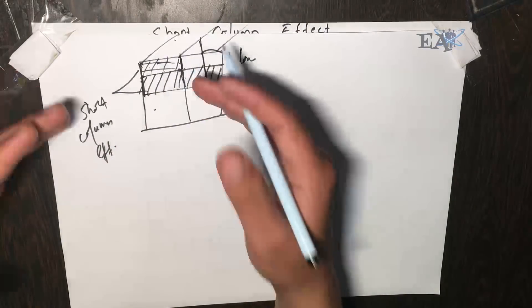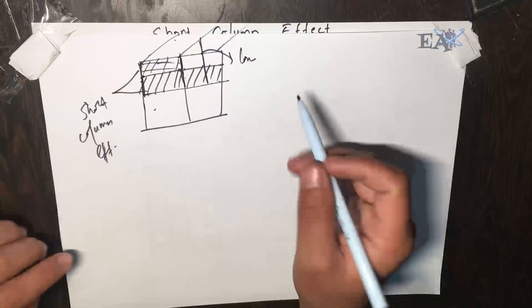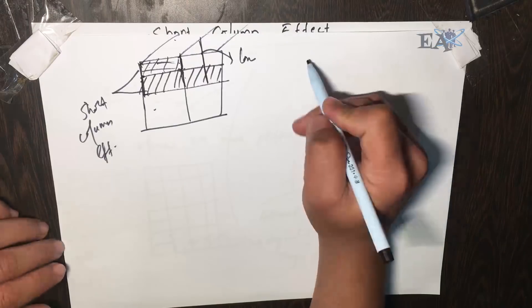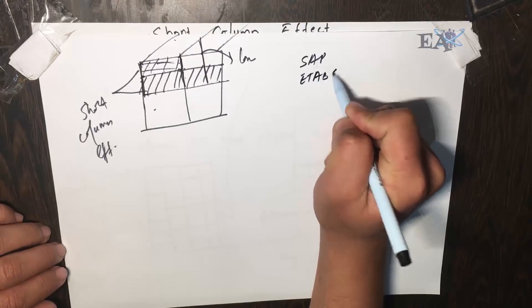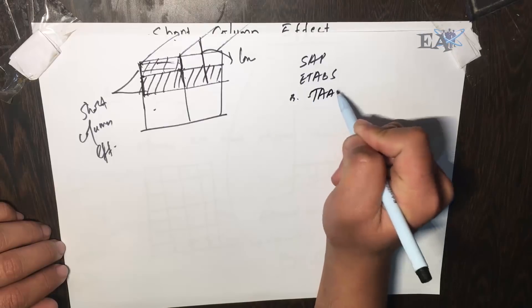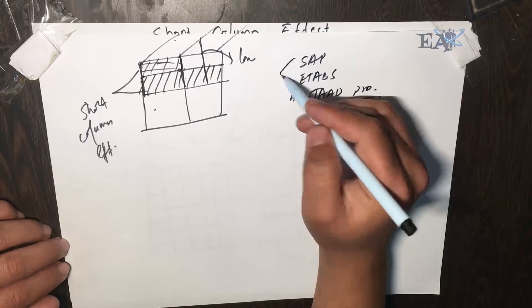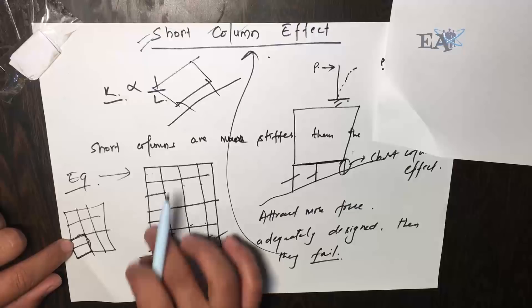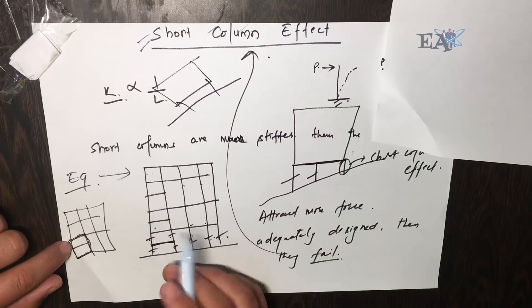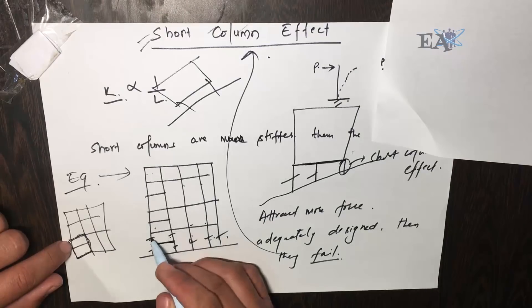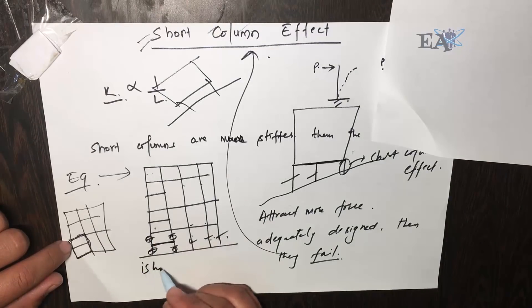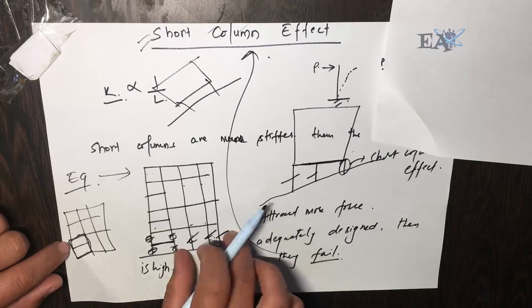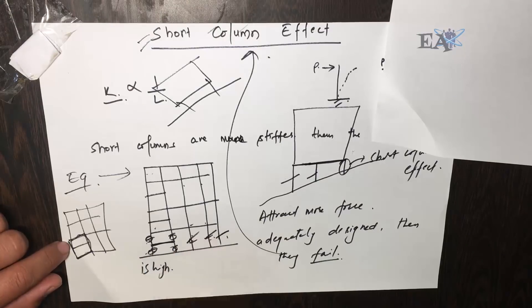How do we know whether a column is going to have the short column effect? The simple answer is that when we do the analysis in any structural analysis and design software like SAP, ETABS, or STAAD Pro, and when you check the shear force diagram, the shear value for the short columns is very high compared to the long columns — this tells us those columns will have the short column effect.